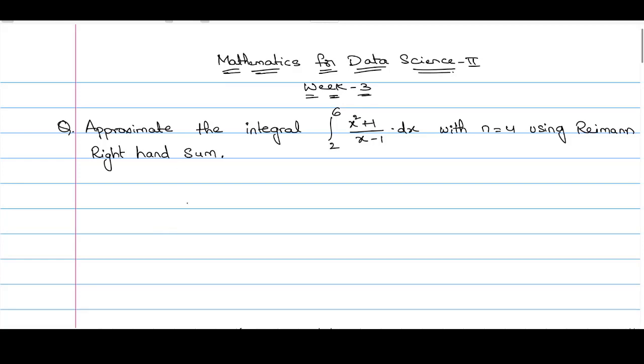We are given integral 2 to 6, x squared plus 1 by x minus 1, dx. This function x squared plus 1 by x minus 1 looks a little complex to integrate. Of course, there are many methods to compute this integral and get the exact value, but let's say you are writing a competitive exam and there is a question like this.